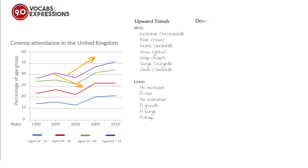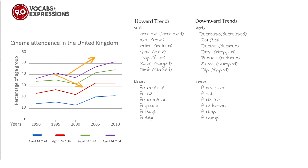For downward trends, we can use these verbs: decrease/decreased, fall/fell, decline/declined, drop/dropped, reduce/reduced, slump/slumped, and dip/dipped. And these are nouns we can use: a decrease, a fall, a decline, a reduction, a drop, and a slump.